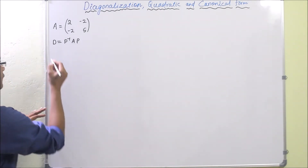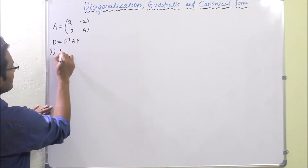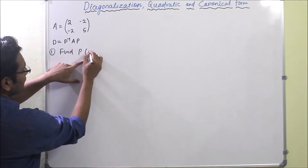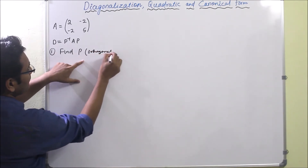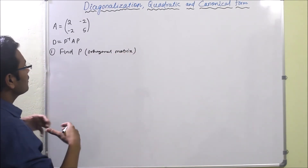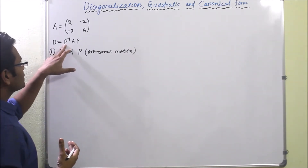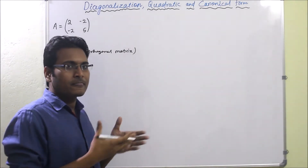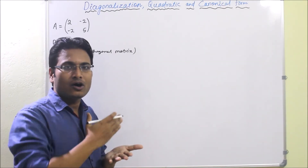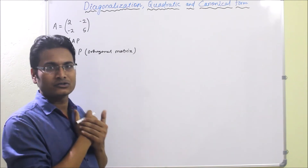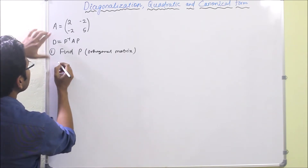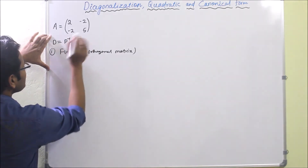The first step is to find P, where P is an orthogonal matrix. P will consist of the same eigenvectors of A, but here we will take the orthonormal versions of those eigenvectors. Now from matrix A we have to find the eigenvalues first.